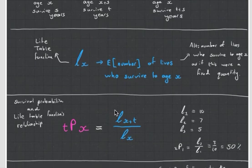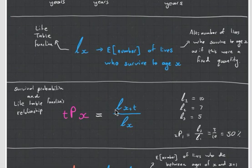Now let's look at how the survival probabilities and life table functions relate to each other. So this is what we have. The probability that someone aged X survives for T years is equal to the amount of people who are at age X+T as your numerator, and the amount of people who have survived to the later year as your denominator.